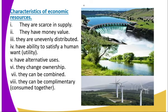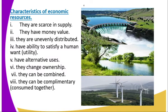Let us look at the characteristics. One, they are scarce in supply. For example, if I look at our images on the other side, you can see water — rivers, dams. When we talk about rivers, they are not found everywhere. And this river is the one that I am using to get electricity and in agricultural activities. So it is scarce in supply.